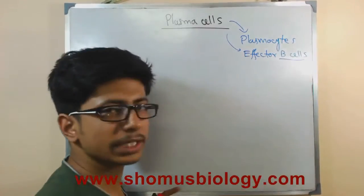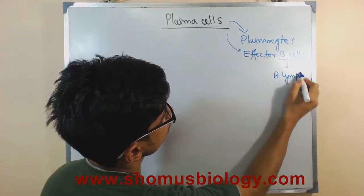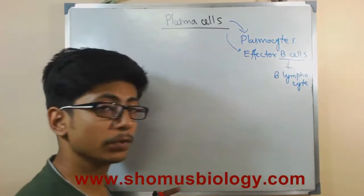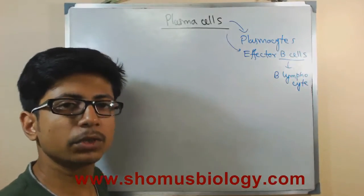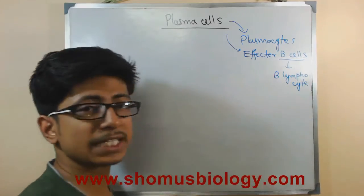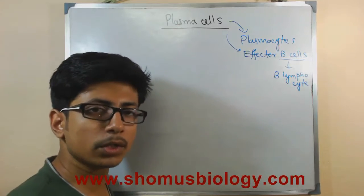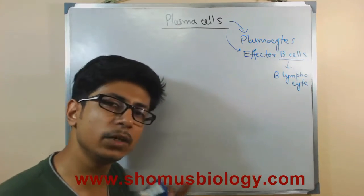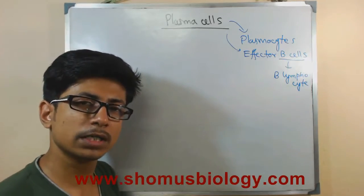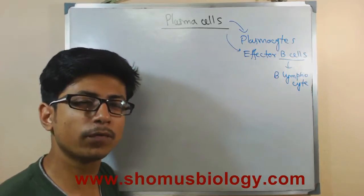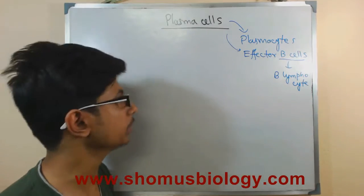They are actually B lymphocyte cells. Inside our body there are two different types of lymphocytes: B lymphocyte cells and T lymphocyte cells. T lymphocyte cells are more important in the case of cellular-mediated immunity, while B lymphocytic cells are important for the humoral mode of immunity, that is the antibody-mediated immunity.